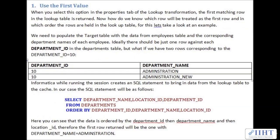First, let's look at the 'use first value' option. When you select this option in the properties tab of the lookup transformation, the first matching row in the lookup table is returned. Now how do we know which row will be treated as the first row and in which order the rows are held in the lookup table? Let's take a look at an example — we need to populate the target table with data from the employees table and the corresponding department names of each employee.